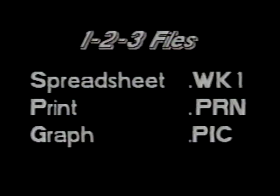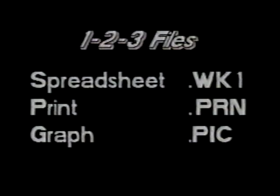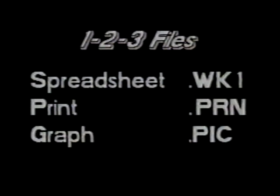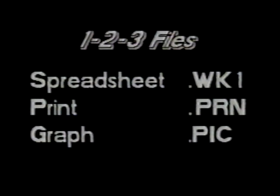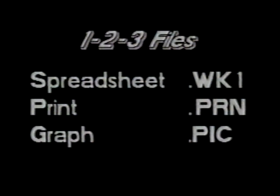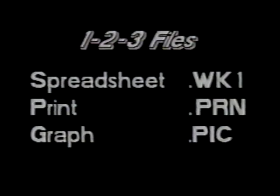Now we cover the commands used to file and print a spreadsheet. 1-2-3 uses certain predefined file types. These types are shown by the file extension. Spreadsheet files have an extension of WK1 and so on. Of course, a 1-2-3 file name must follow DOS rules.